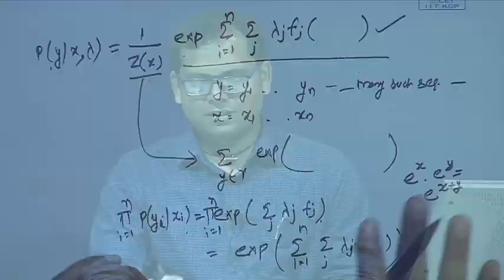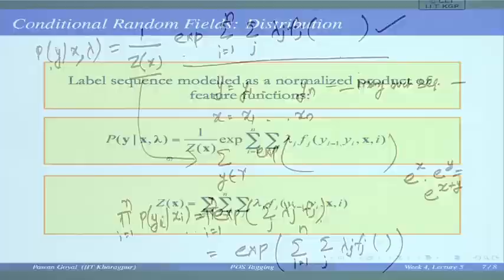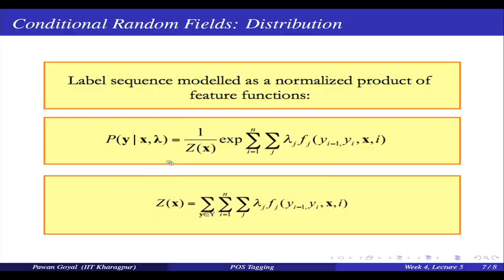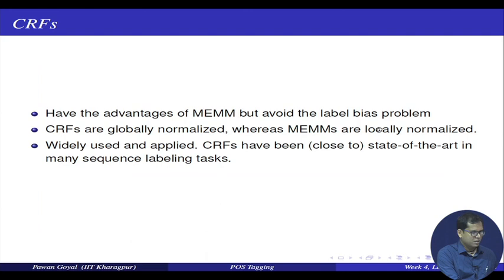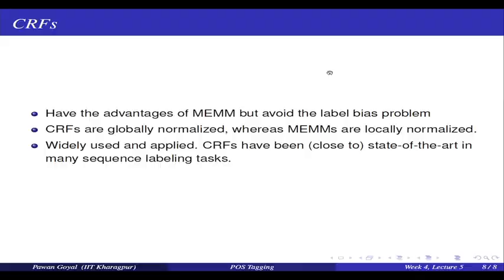In MEMM you ensure that all tags at each position add up to 1. In CRFs you do not do that at each position — you compute something proportional to the probability for each tag sequence and then normalize everything at the end by Z(x). That is where CRFs avoid the label bias problem. CRFs are globally normalized and have the advantages of MEMM — they use the same features — but avoid the label bias problem.